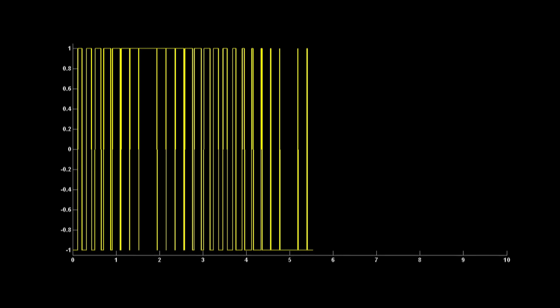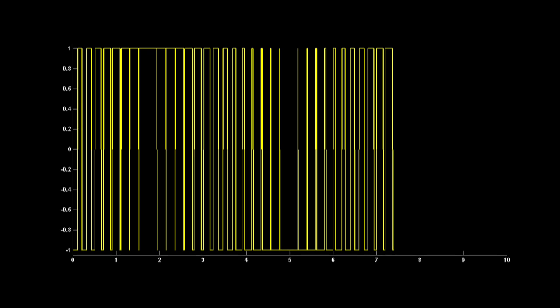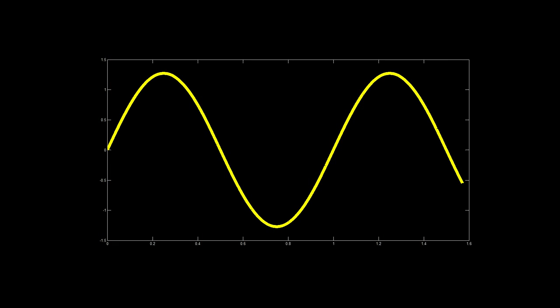So what we want to see is how can we transform something as discontinuous as this voltage signal shown here to something much smoother such as the waveform shown here. Here we have a sinusoidal waveform and maybe we want to change the frequency or the amplitude of this waveform by employing power conversion systems.